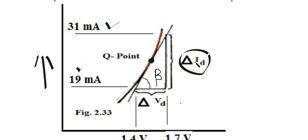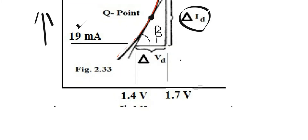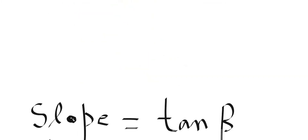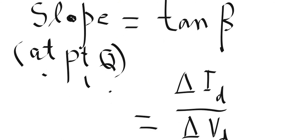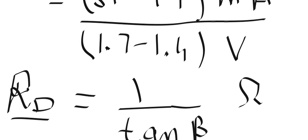Now tan(β) here: delta_ID is 31 milliamperes minus 19 milliamperes. Delta_VD is 1.7 minus 1.4. First find tan(β), then take the reciprocal — that will give the dynamic resistance.